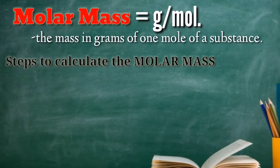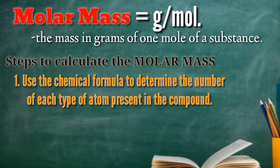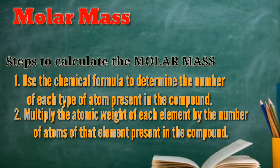How to find the molar mass of a compound? First, use the chemical formula to determine the number of each type of atom present in the compound. Second, multiply the atomic weight of each element by the number of atoms of that element present in the compound.